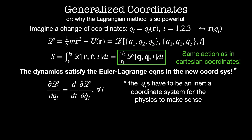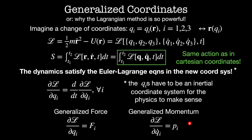We can extend the definitions of force and momentum using the Euler-Lagrange equations for generalized coordinates. The generalized force is dL by dq_i, and the generalized momentum is dL by dq_i dot. These quantities might not have a direct physical interpretation as vectors, but they are very useful in calculating dynamics, particularly when we study Hamiltonian systems.